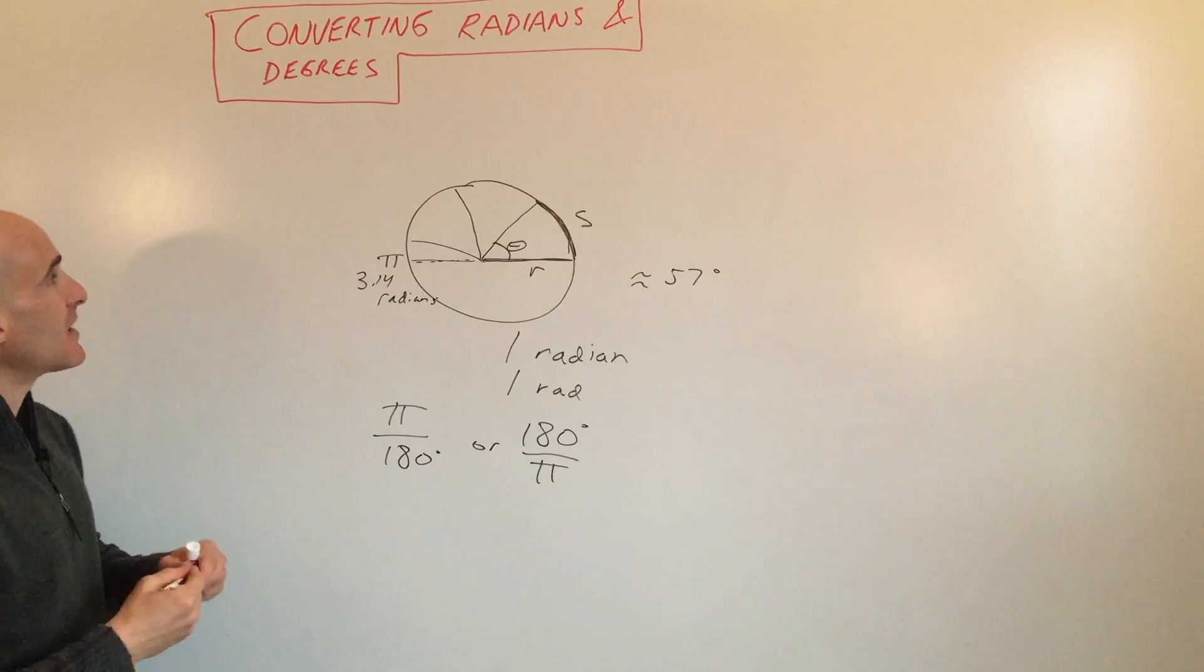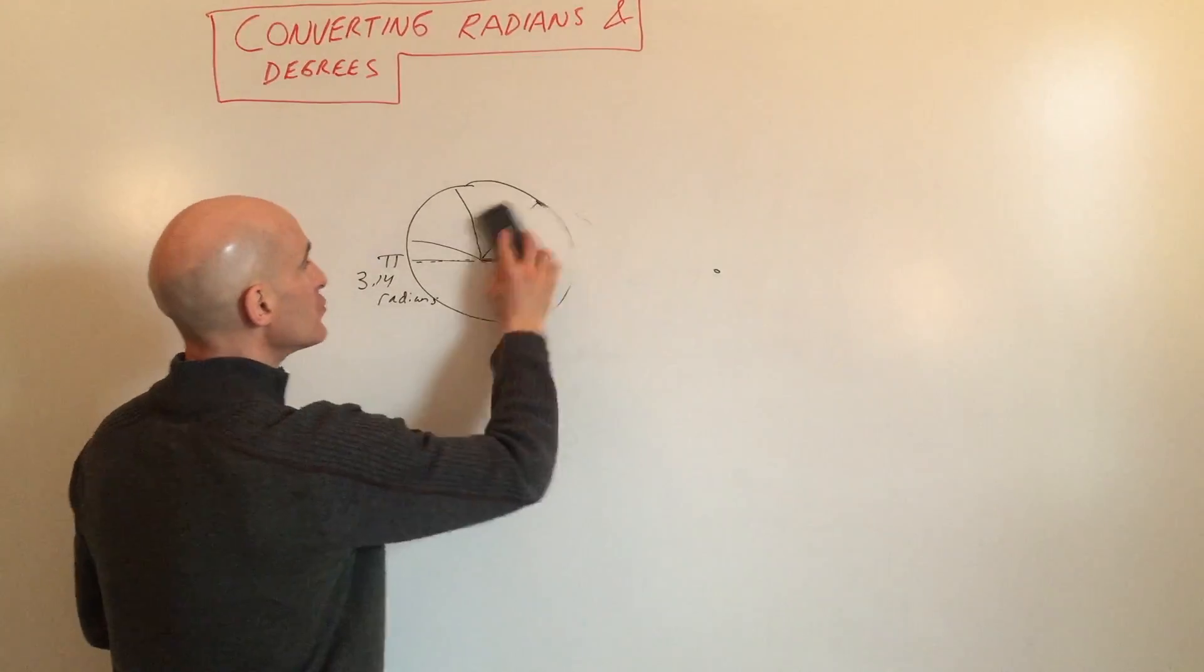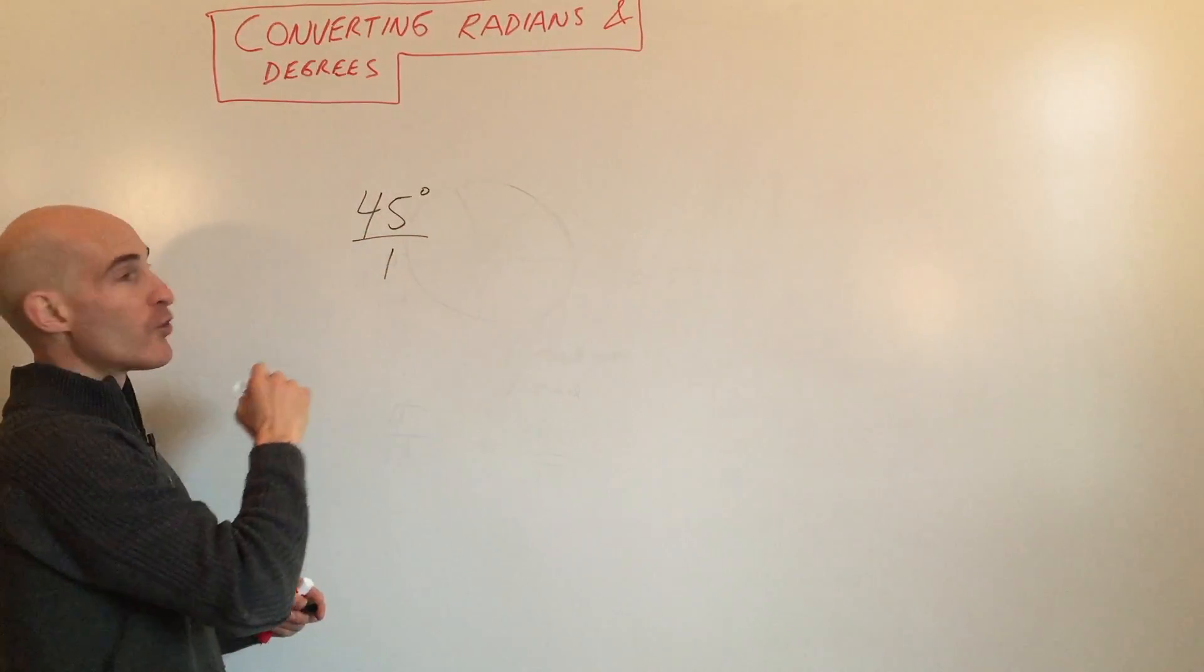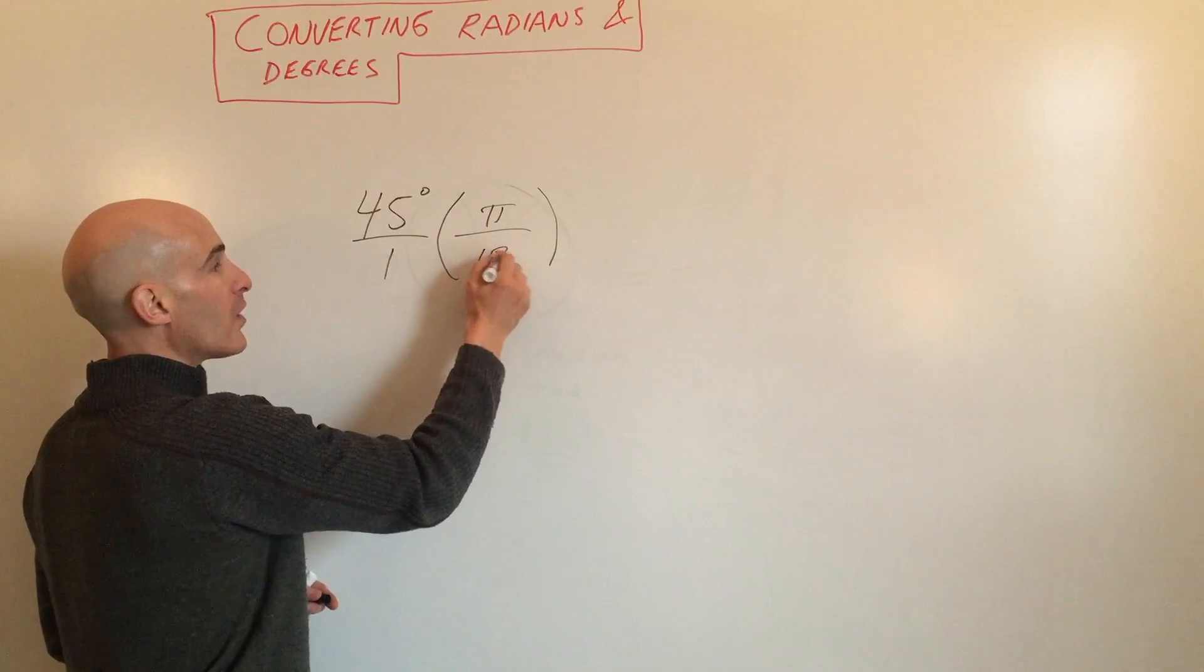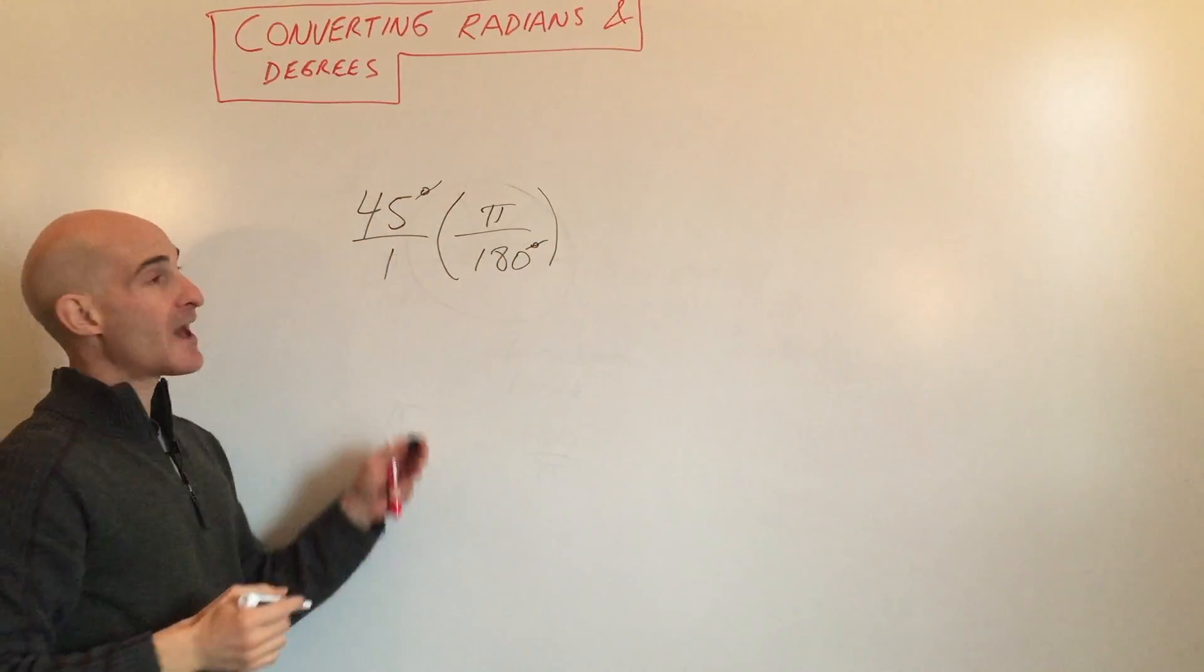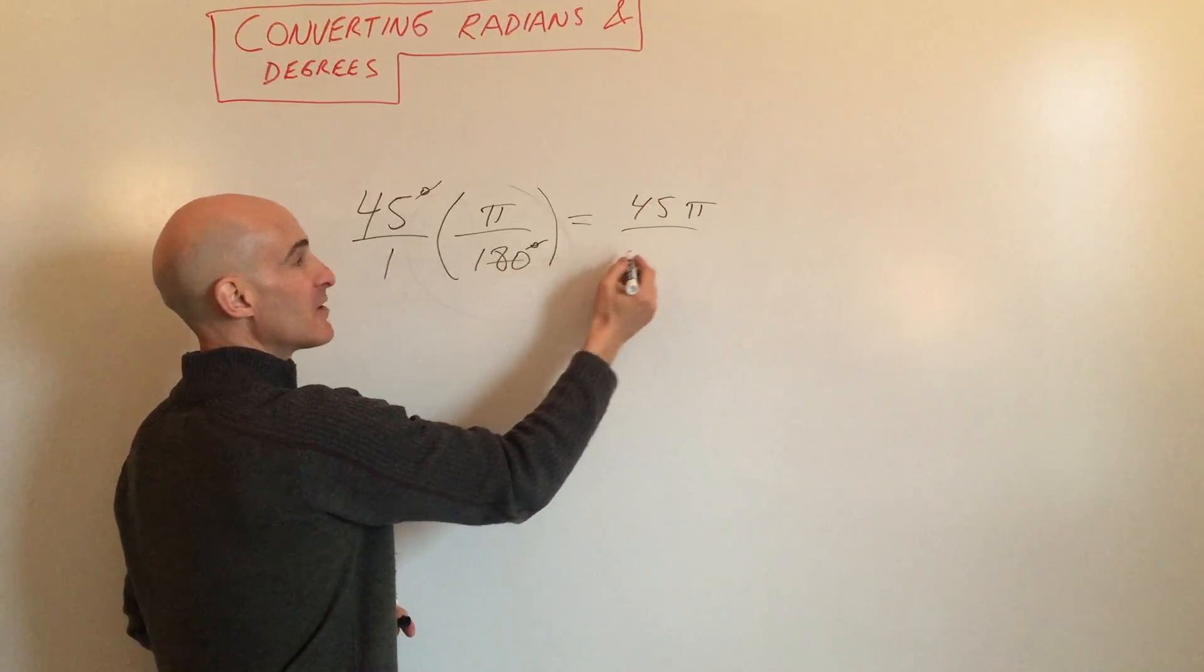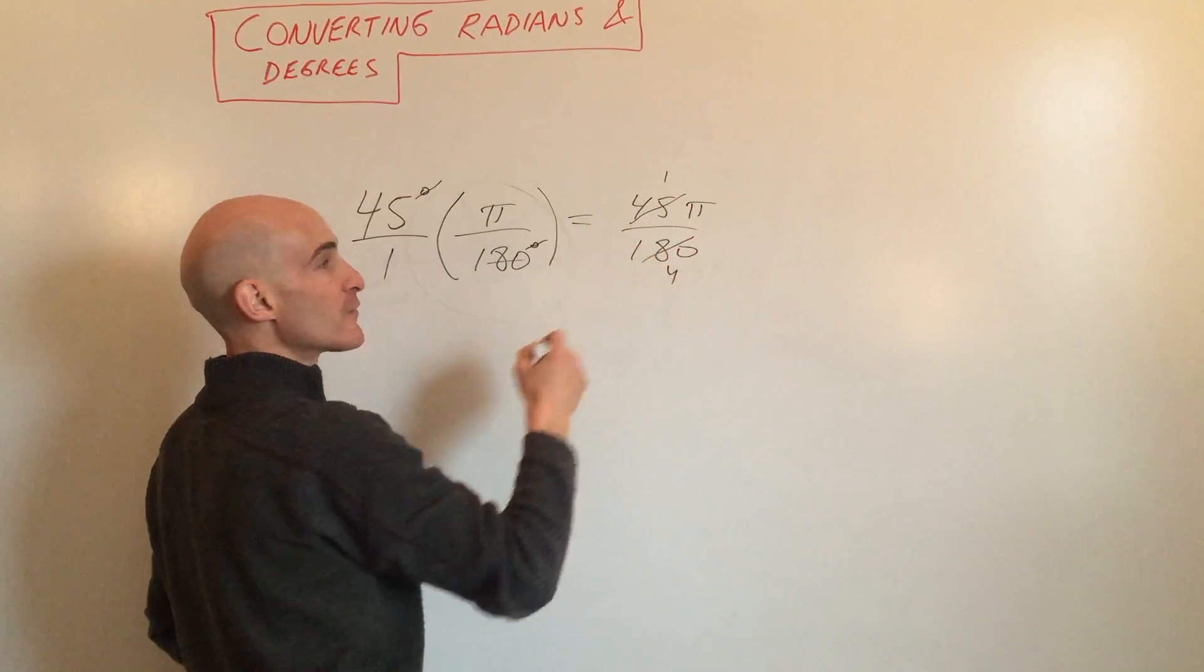Let's say you wanted to convert 45 degrees to radians. We start with 45 degrees, which is 45 degrees over 1. Multiply it by π radians over 180 degrees. The degree unit cancels numerator and denominator. When we multiply across, we get 45π over 180. We can reduce: 45 goes in here once, 45 goes in here four times, so this equals π/4 radians.